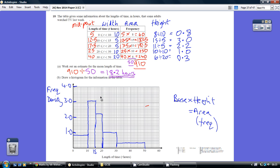Now, we're being asked to draw a histogram. Remember, the key thing with a histogram is the area of these bars equals the frequency. Area equals frequency. So these areas have to equal 8, 15, 11, and so on.